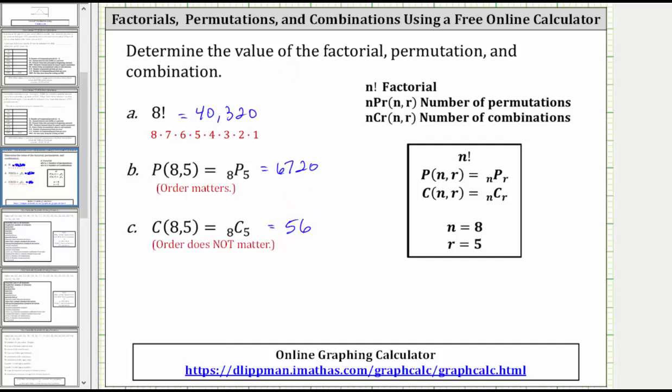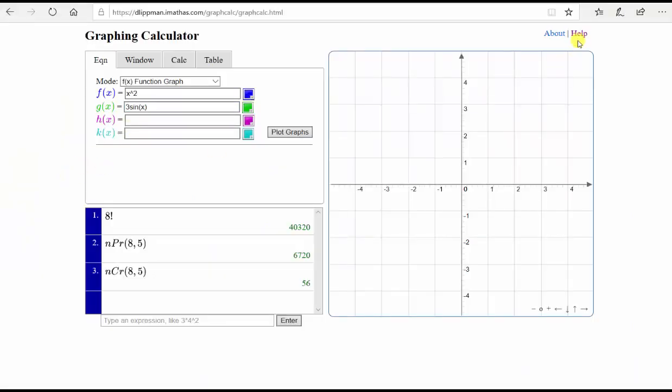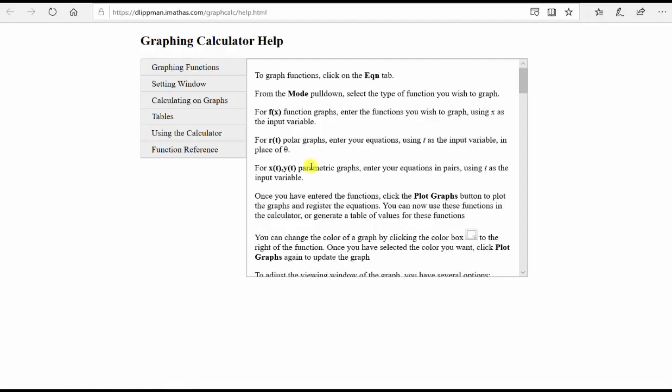You might be wondering how I knew what notation to use for the permutation and combination. Let me show you where to find this notation. Go back to the calculator and click help in the upper right corner. This opens the help menu, which covers all features for this graphing calculator. Click on function reference and scroll down.